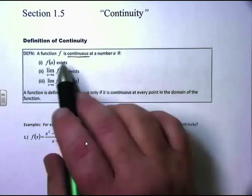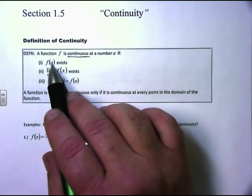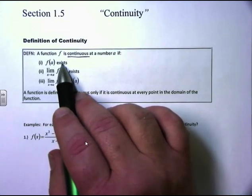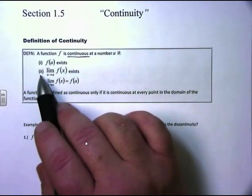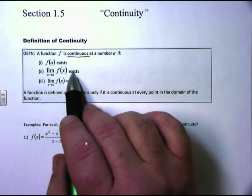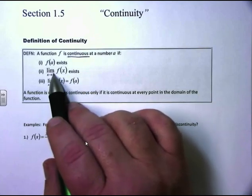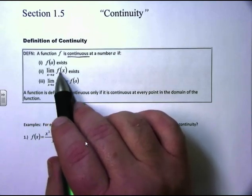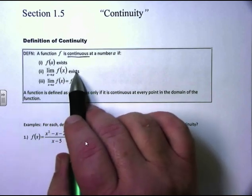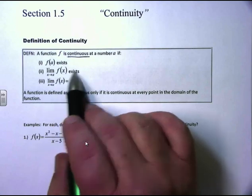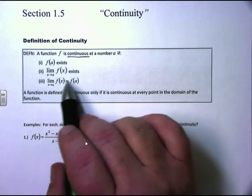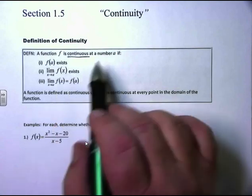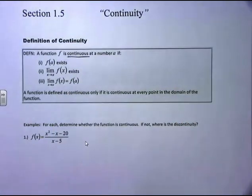For a function to be continuous at a number a: one, f of a has to exist — meaning when I plug in a, I get a numerical value, there's a dot on the graph. Two, the limit as x approaches a of f of x has to exist — the limit from below must equal the limit from above. Three, the number we got for f of a has to equal the number we got for the limit. The dot fills in the hole in the graph — that's what makes it continuous.